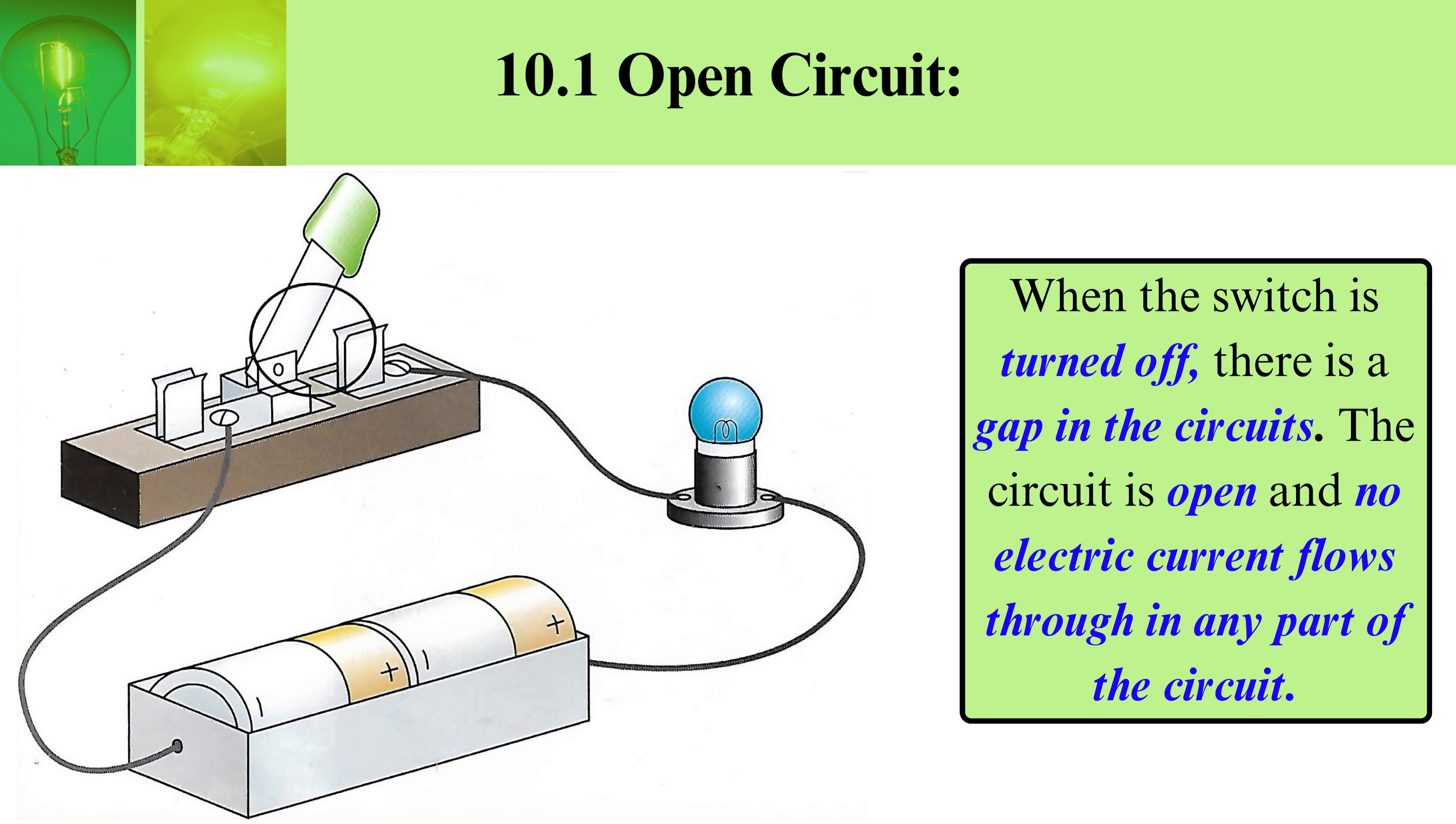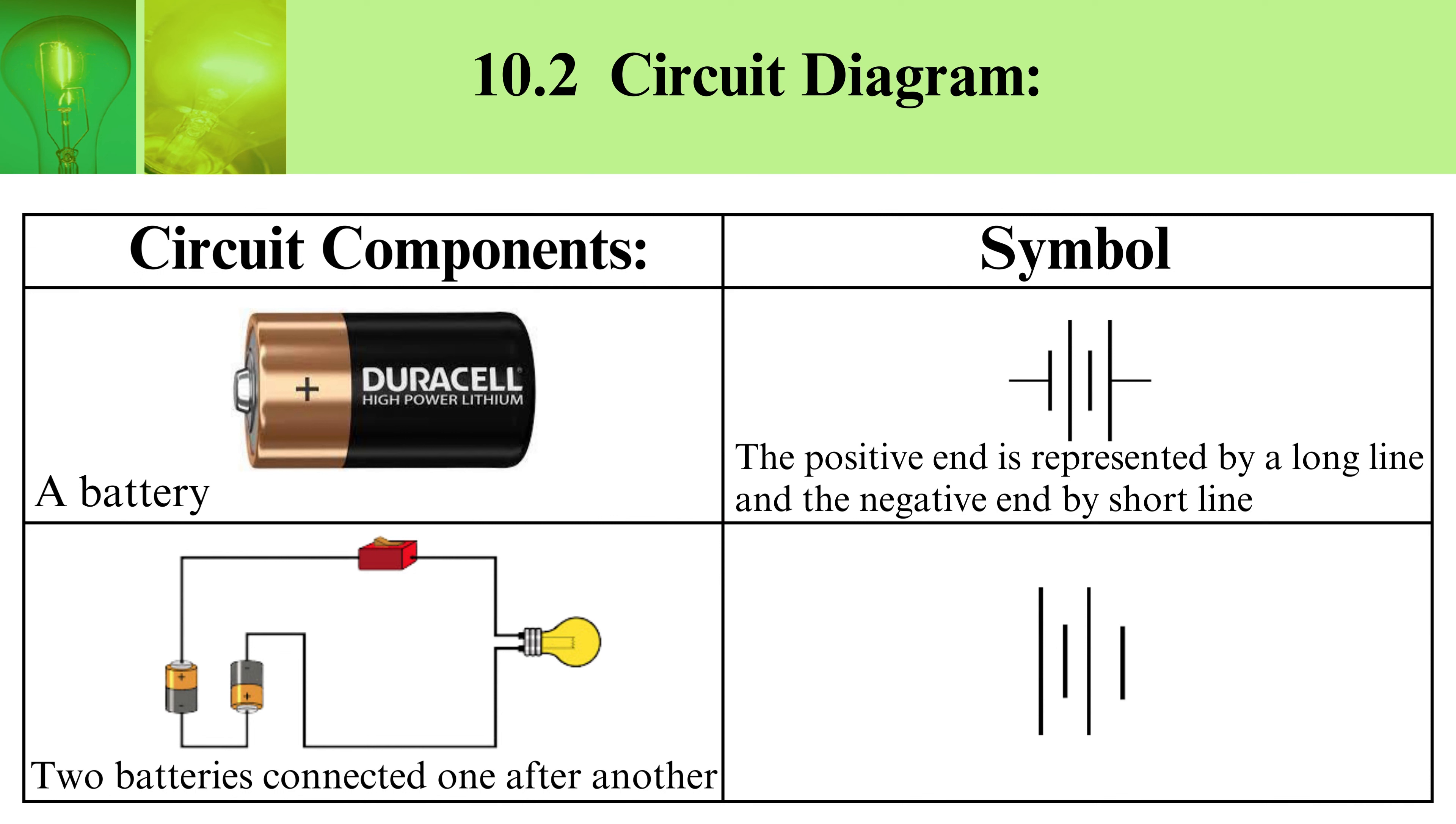Circuit diagrams and symbols: A battery is indicated with a symbol. The positive end is represented by a long line and the negative end by a short line. Two batteries connected one after another show two long lines and two short lines.